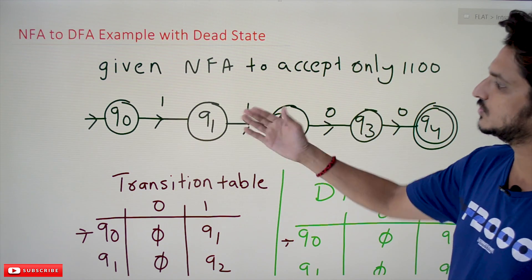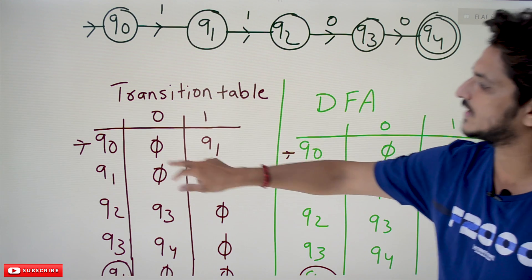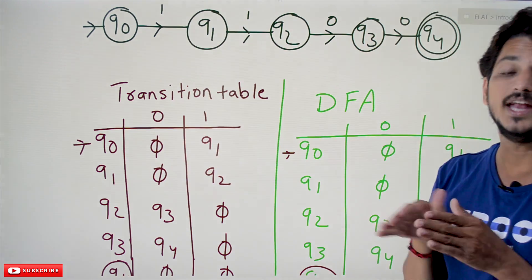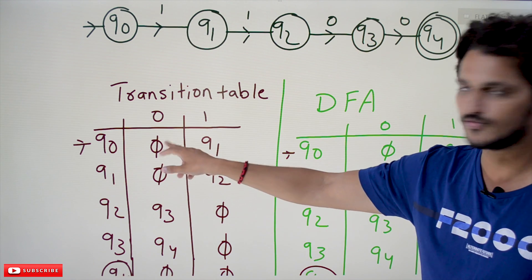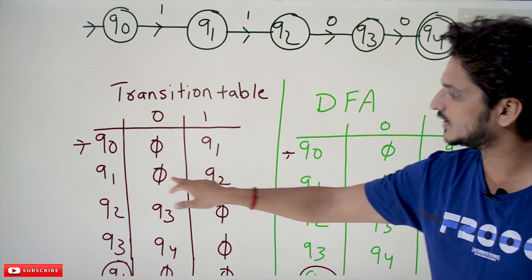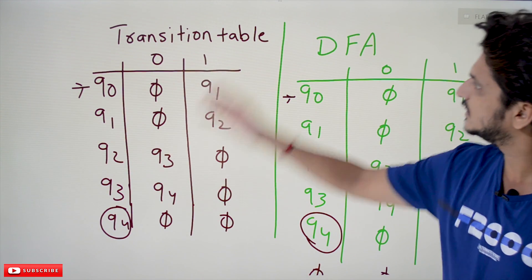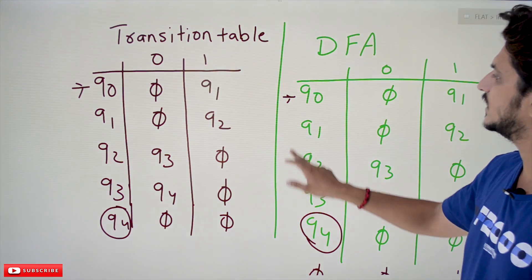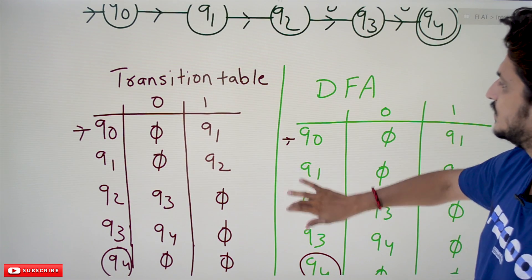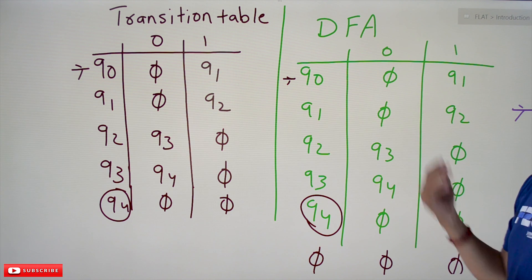In order to convert NFA to DFA, first we have to convert this into a transition table. On Q0, if you take 0 we are not moving to any state, so we call it Phi. On 1 we go to Q1. Q1 on 0 gives Phi, on 1 gives Q2. Q2 on 0 gives Q3, on 1 gives Phi. The same transition table we are converting — hoping that you already know how to convert this.